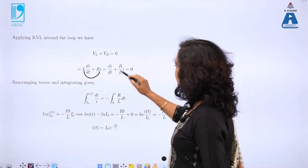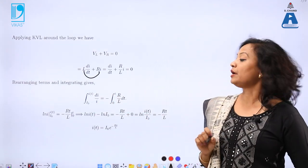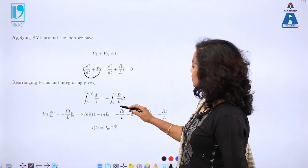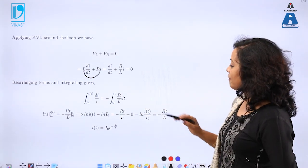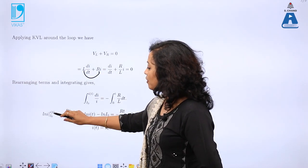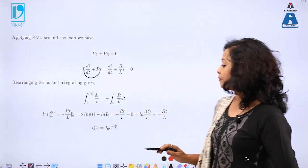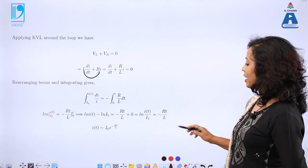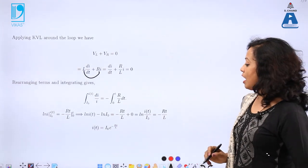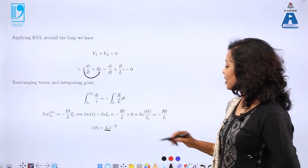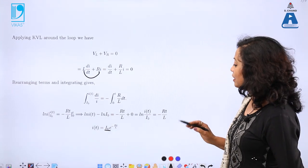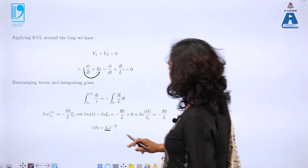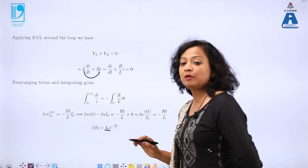Separating variables and integrating from I0 to i(t) and 0 to t: ln(i) from I0 to i(t) equals −Rt/L from 0 to t. Solving: ln(i(t)/I0) equals minus Rt/L, therefore i(t) equals I0·e^(−Rt/L). Here I0 is the initial current at t equals zero, R and L are circuit elements, and t is any instant at which we wish to observe the current. The final equation is i(t) equals I0·e^(−Rt/L).